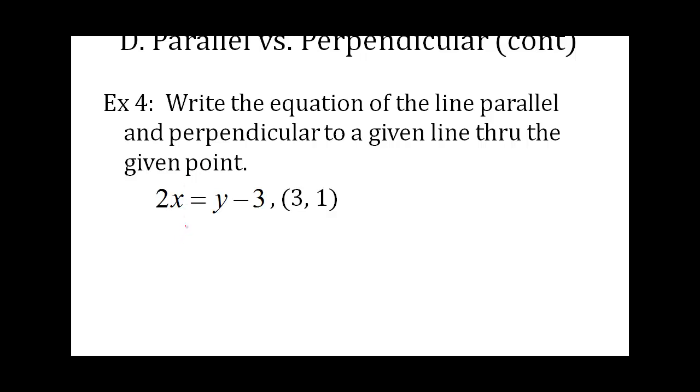Next, we need to write an equation of a line parallel and perpendicular to the line given through the given point. First thing I need to do is recognize that this is not in slope-intercept form. I need it there so I can identify my slope. I need to get y by itself. All I need to do is isolate the y by adding 3 to both sides. My equation is 2x plus 3. Now I know the slope is 2.